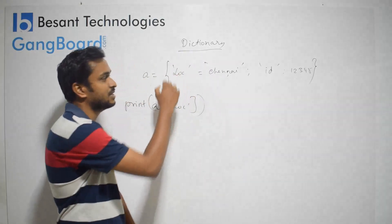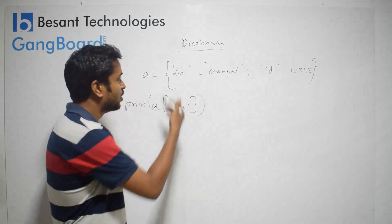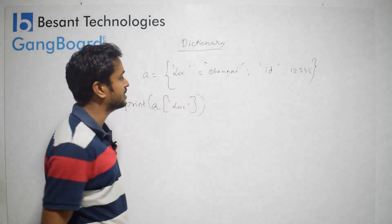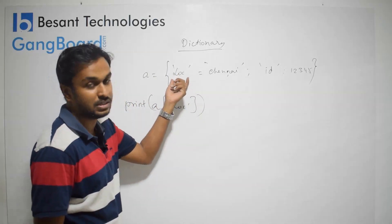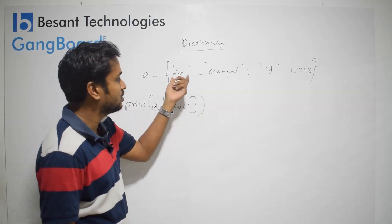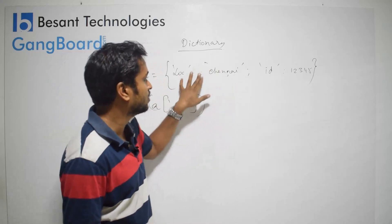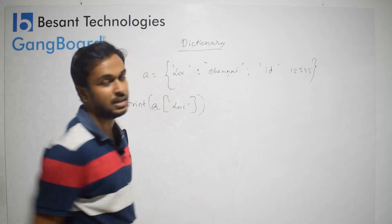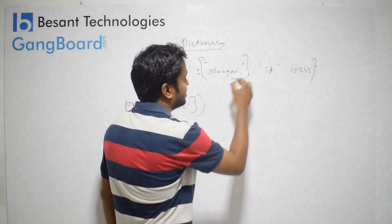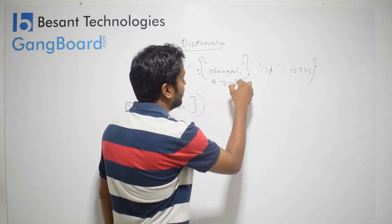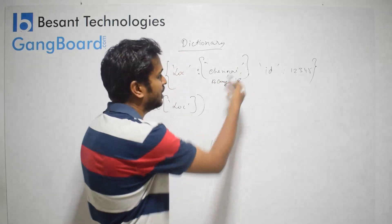We'll create a dictionary. To create a list, we'll use square brackets. We'll create a dictionary — I'll create a key and assign a new value. If we create multiple values — Chennai, Bangalore — we can create them. We'll store multiple values.